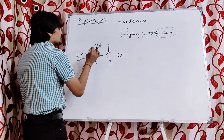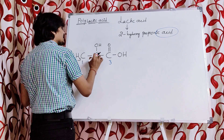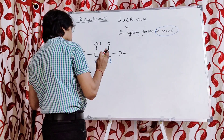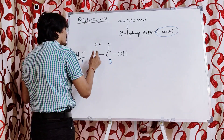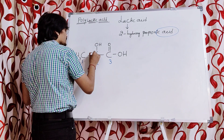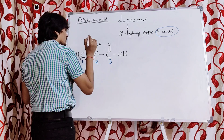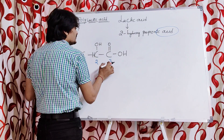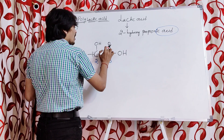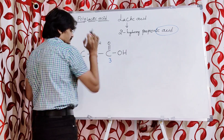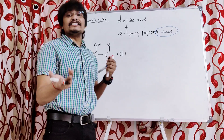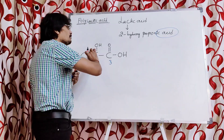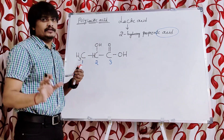Coming to the second carbon: there are three bonds present around it, so it is lacking one bond — we place one hydrogen. Coming to the third carbon: counting its bonds — one, two, three, four — the valency of the third carbon is already satisfied, so we need not place any hydrogen at the third carbon.